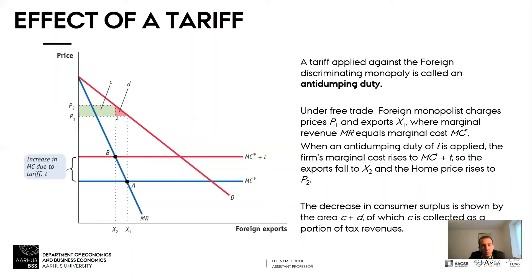What about the government? The government collects revenue equal to tariff T over the x2 units that are imported and sold in the home economy. That revenue is a rectangle whose base is x2 — the quantity of imports.